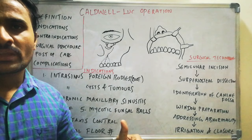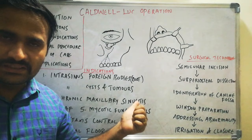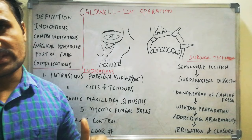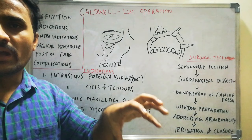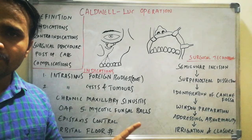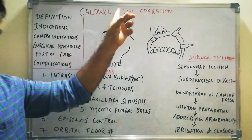In cases of chronic Maxillary Sinusitis, you have to completely clear the infection in the Maxillary Sinus. The Caldwell-Luc operation is helpful for drainage and irrigation of the chronically infected Maxillary Sinus lining. Similarly, in Oroantral Fistula cases, there is infection of the Maxillary Sinus lining, and for that you use the Caldwell-Luc operation.